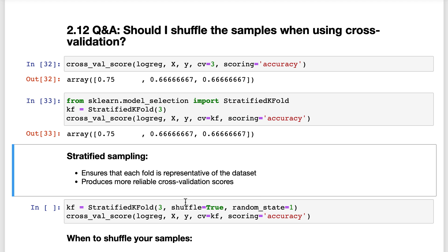If you do need to shuffle the samples, you simply modify the cross-validation splitter by setting shuffle to true, and then pass that splitter object to cross-val score. Note that because you are introducing randomness into the process by shuffling, you should also set a random state to ensure reproducibility.